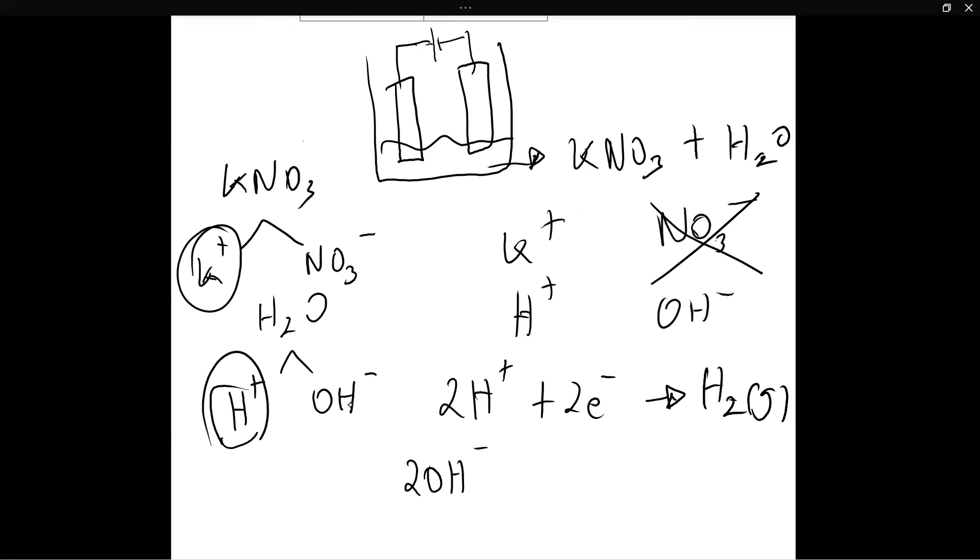The oxidation of OH minus looks something like this. So 2OH minus produces H2O plus two electrons plus one half moles of oxygen gas. Now I haven't written the symbols, the state symbols, but do remember to write that if you are doing it in the exam. But anyways, as you can see, the 2OH minus, it gets oxidized. It forms water, it gives off two electrons and it forms half a mole of oxygen gas.